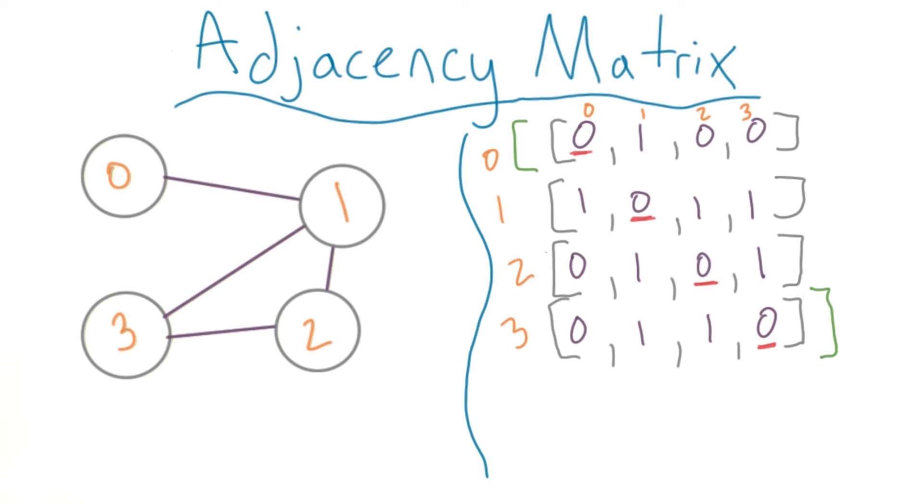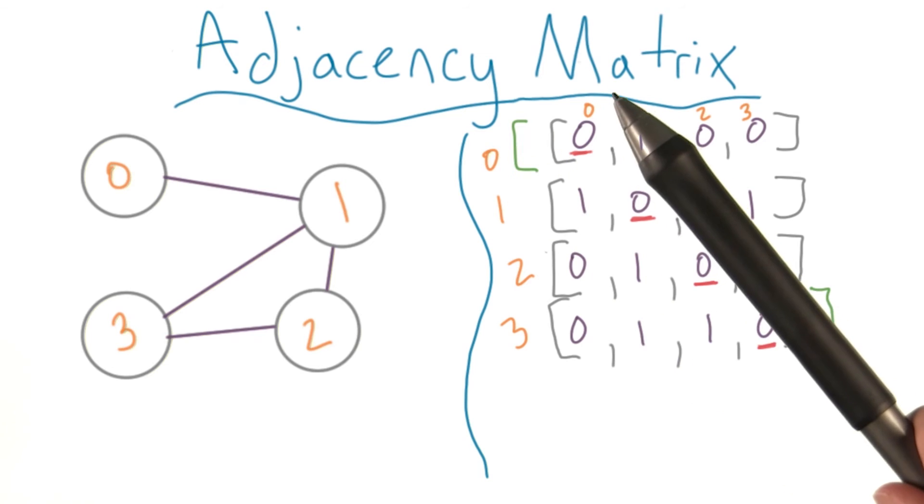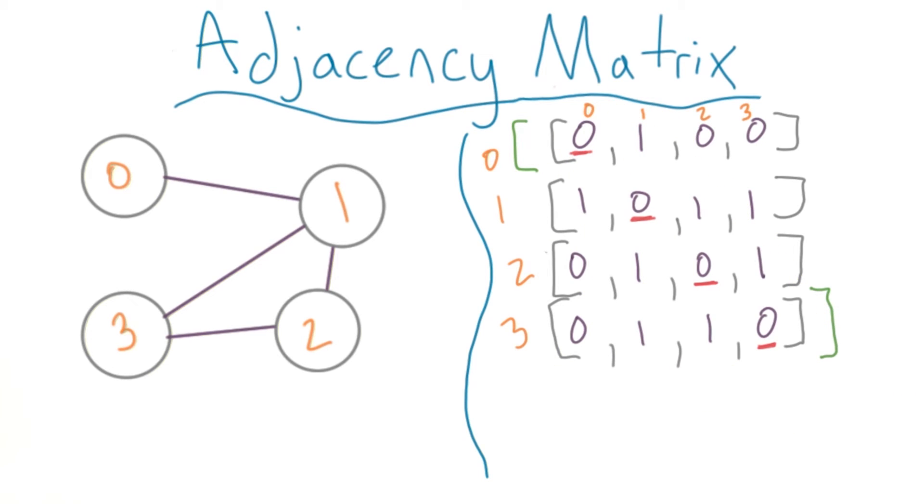You might notice that the diagonal, or the place on every line where the row number equals the column number, is always 0. This value would only be 1 if there was an edge that started and ended with the same node, but we don't have any of those in our graph.